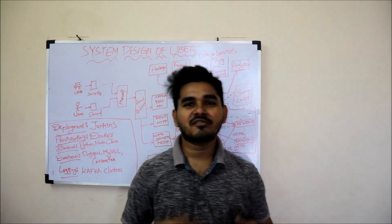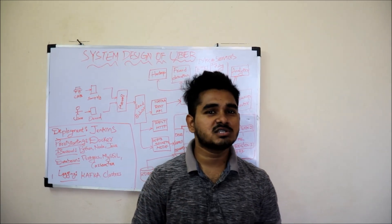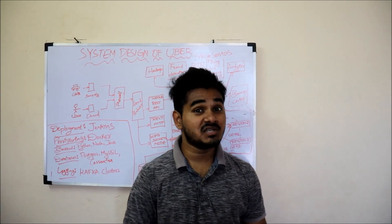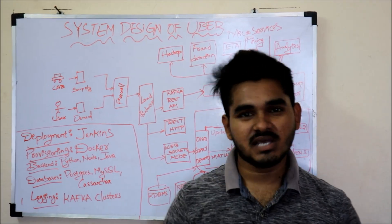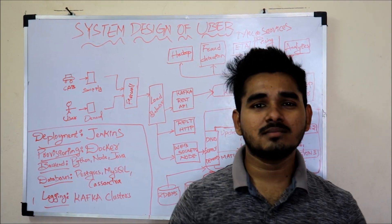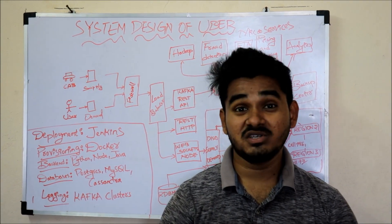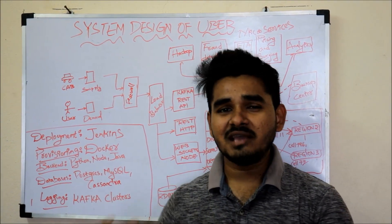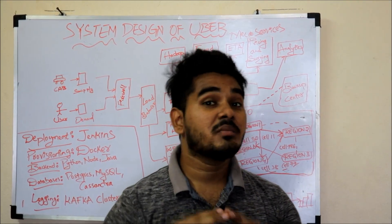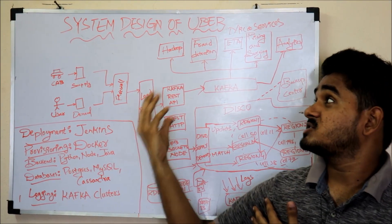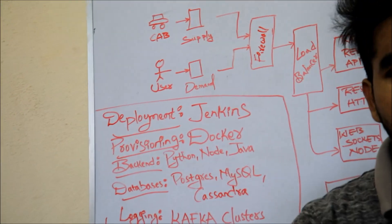Hello everyone, this is Ashwant. I am back with another video after a long gap. In this video I am going to explain about the importance of system design in product development, with an example of Uber system design. It can also be related to Ola. These two are very popular cab services all over the world and they make transportation much easier nowadays. So before going to explain the architecture of Uber, I want to explain something about system design.